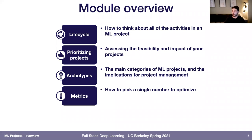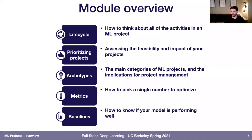Then we'll talk about metrics — the numbers you look at when optimizing a machine learning model, why it's important to pick a single metric, and how to pick that metric. Finally, we'll talk about baselines, which are essentially a way of understanding whether your model is performing well or not. These last two are things you should have in place before you even start training models.